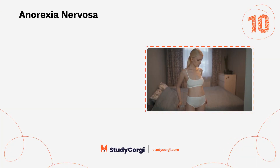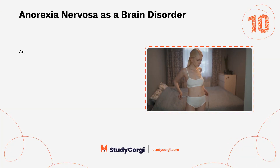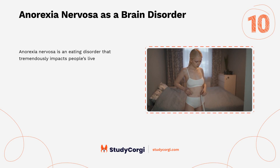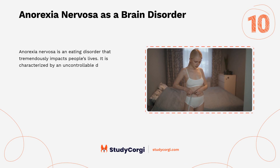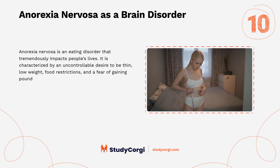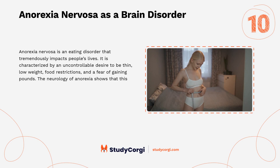Anorexia nervosa as a brain disorder. Anorexia nervosa is an eating disorder that tremendously impacts people's lives. It is characterized by an uncontrollable desire to be thin, low weight, food restrictions, and a fear of gaining pounds. The neurology of anorexia shows that this disorder is classified as psychological — in other words, the problem emerges in a patient's mind and then affects the body.